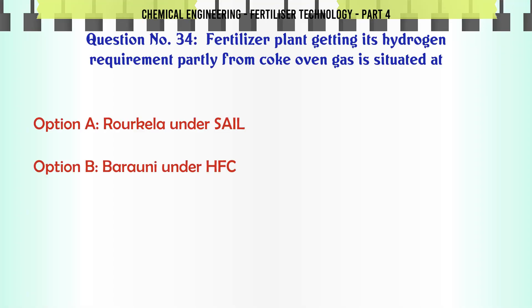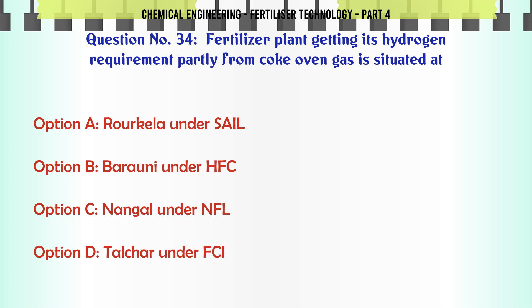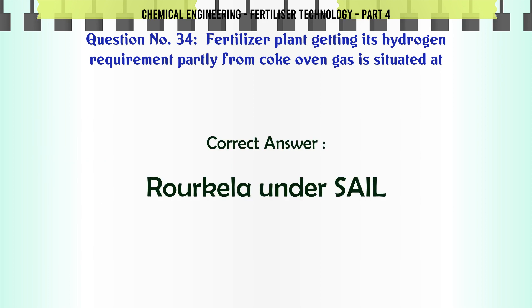Fertilizer plant getting its hydrogen requirement partly from coke oven gas is situated at: a. Rourkela under SAIL, b. Barauni under HFC, c. Nangal under NFL, d. Talcher under FCI. The correct answer is: Rourkela under SAIL.